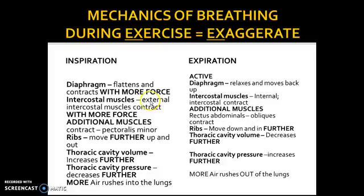Due to the increased demand for oxygen during exercise, there are additional muscles used to help pull the ribs further up and out. These include the pectoralis minor, the scalenes, and also the sternocleidomastoid. The pectoralis minor helps enforce those ribs up and out. This makes the ribs move further up and out, the thoracic cavity volume increases further, the thoracic cavity pressure decreases further, and this leads to more air rushing into the lungs — an increased depth of breathing. Same process as rest, but exaggerated with additional muscles.